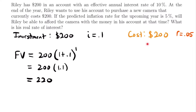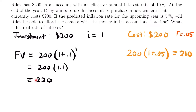Now let's adjust the cost of the camera using the inflation rate. Because of inflation, the cost of the camera is going to increase over that one-year period. The end-of-year cost of the camera due to inflation is equal to 200 times 1 plus the inflation rate of 0.05 — so we're multiplying 200 by 1.05 — which equals $210. At the end of one year, the camera that used to cost $200 now costs $210 because of the 5% inflation for that year.